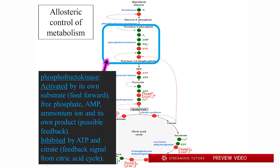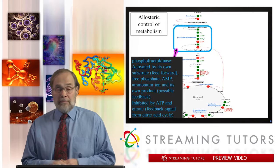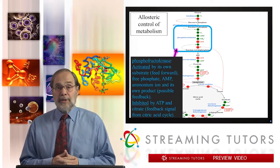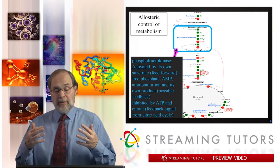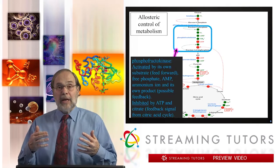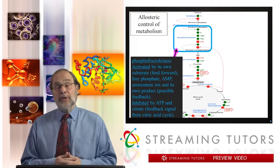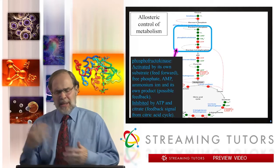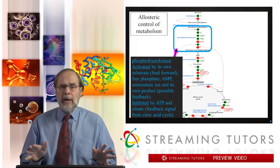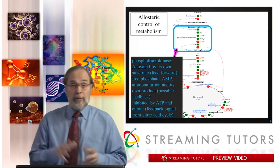Phosphofructokinase has some interesting regulatory stories. It is feed-forward regulated — its substrate stimulates it, and in fact its product, fructose 1,6-bisphosphate, also stimulates it. That seems a little odd at first glance — if there's a lot of product, why would you stimulate more production? But that makes sense in context of its other regulatory interactions.